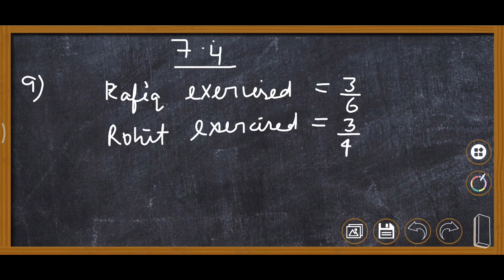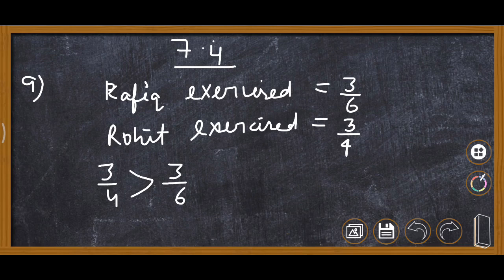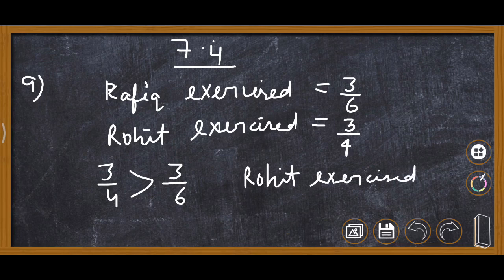We compare 3 upon 4 and 3 upon 6. Whenever the numerators are the same, the fraction with the smaller denominator is greater. So 3 upon 4 is definitely greater than 3 upon 6. Therefore Rohit exercised for a longer time.